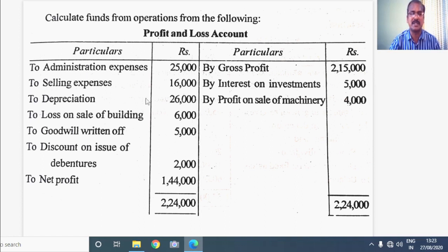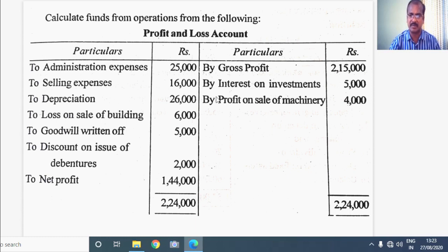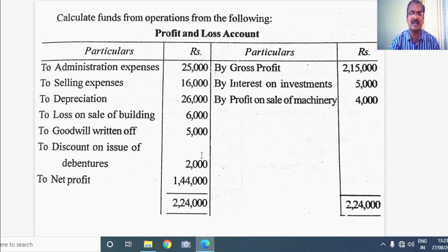Among these expenses we should identify the non-operating or non-fund expenses. In the credit side we should identify the non-operating incomes or non-fund incomes. We have to identify them and do the adjustments with the net profit so that we could calculate the funds from operations, which could otherwise be called as operating profit, which lies in between gross profit and net profit.